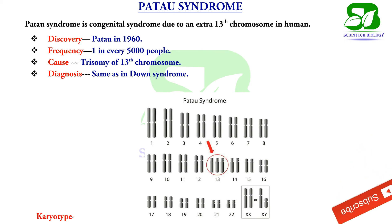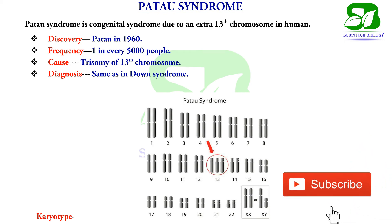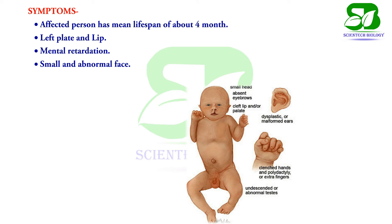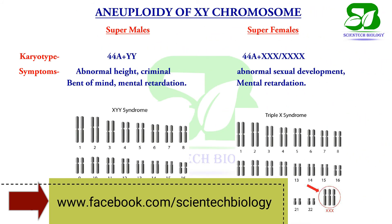Patau syndrome is also an autosomal abnormality due to trisomy of the 13th chromosome. This disorder was first reported in 1960. The affected child has a mean life span of about four months. Small abnormal facial features and mental retardation are some common symptoms of this disorder.